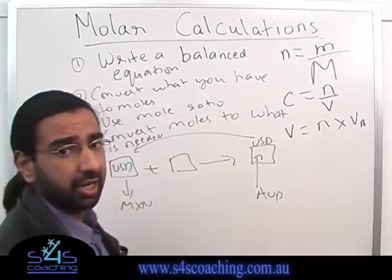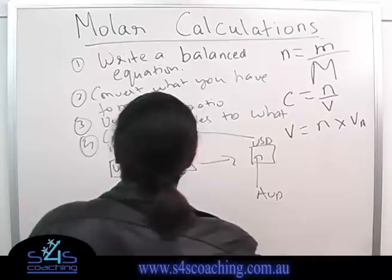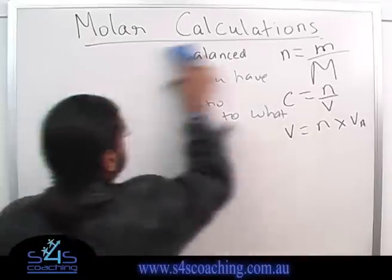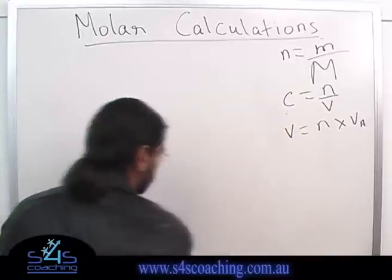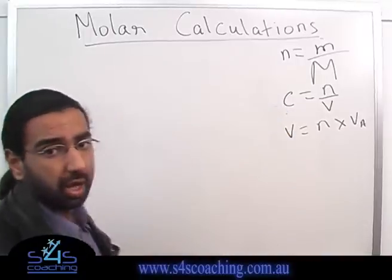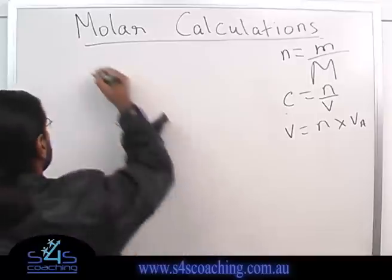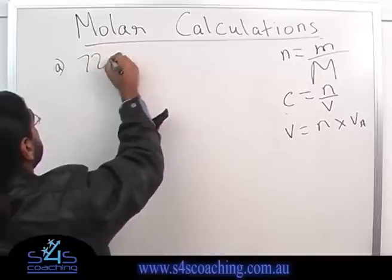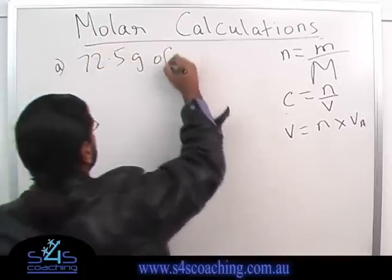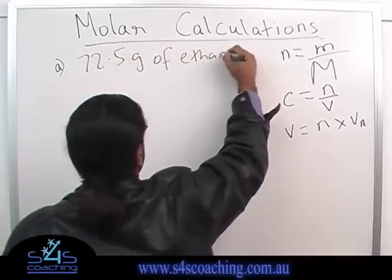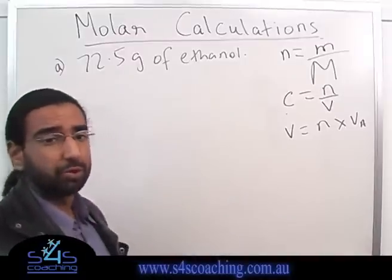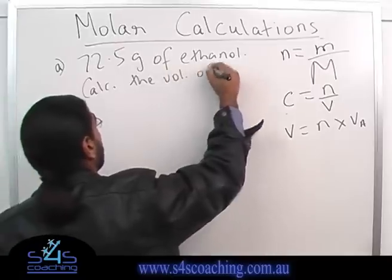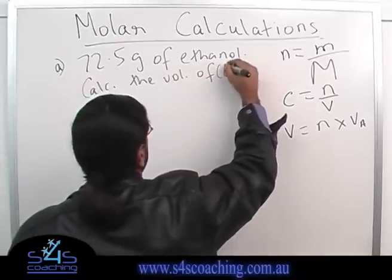Let's do an example. I'll write the question up on the board. Basically, the question asks: if 75.2 grams of ethanol are completely combusted, calculate the volume of carbon dioxide gas produced.